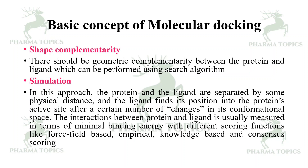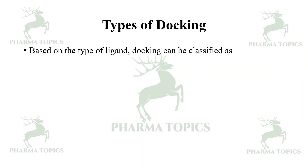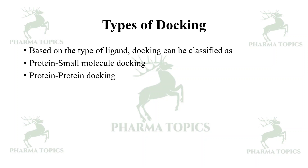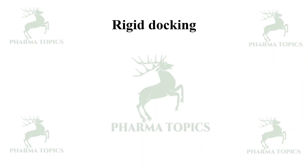The scoring functions include force field based, empirical, knowledge based, and consensus scoring. What are the types of docking? Based on the type of the ligand, docking can be classified as protein-small molecule docking, protein-protein, and protein-DNA docking. Other types are rigid docking, flexible docking, manual docking, ensemble docking, and so on.